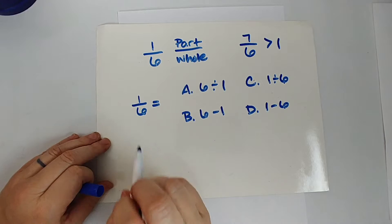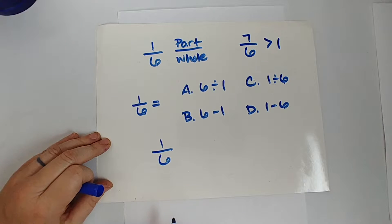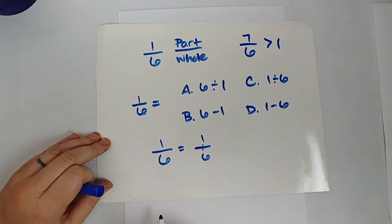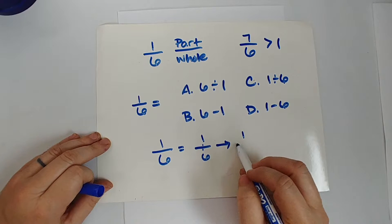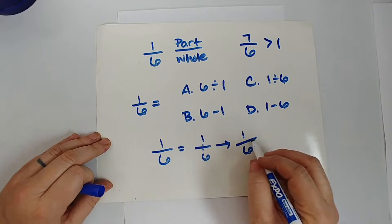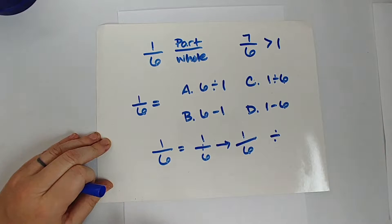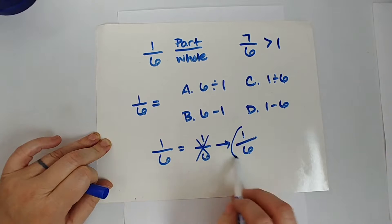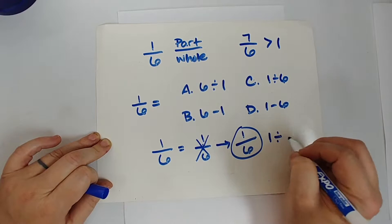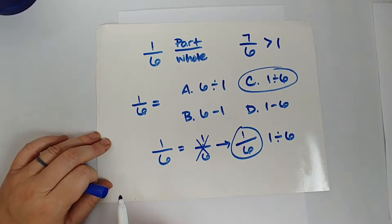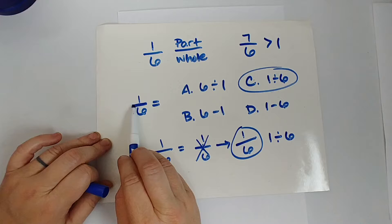That fraction bar in one over six — it really is one divided by six. Way back when, mathematicians decided the long division symbol was ugly, so the division bar became a shorthand slash, and that slash was the same thing as our division symbol. It was just a shorter, quicker way to write it. So when they ask you what one sixth equals, it's one divided by six — the fraction bar is a division bar.